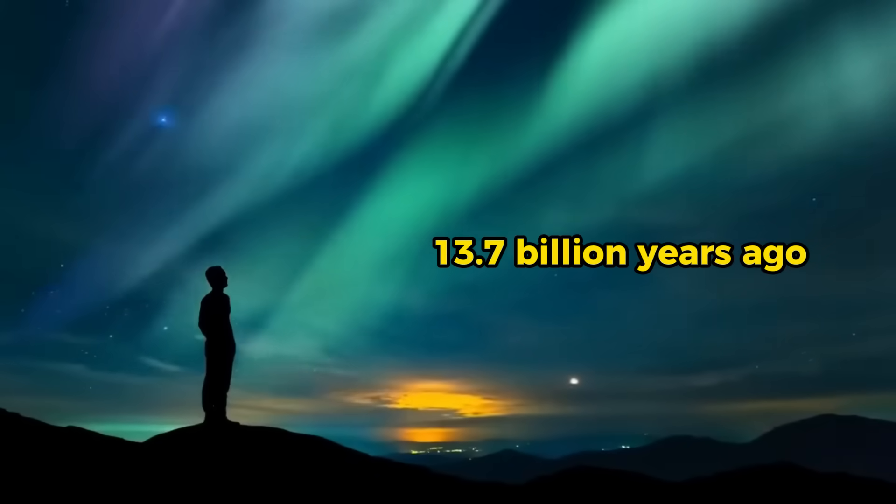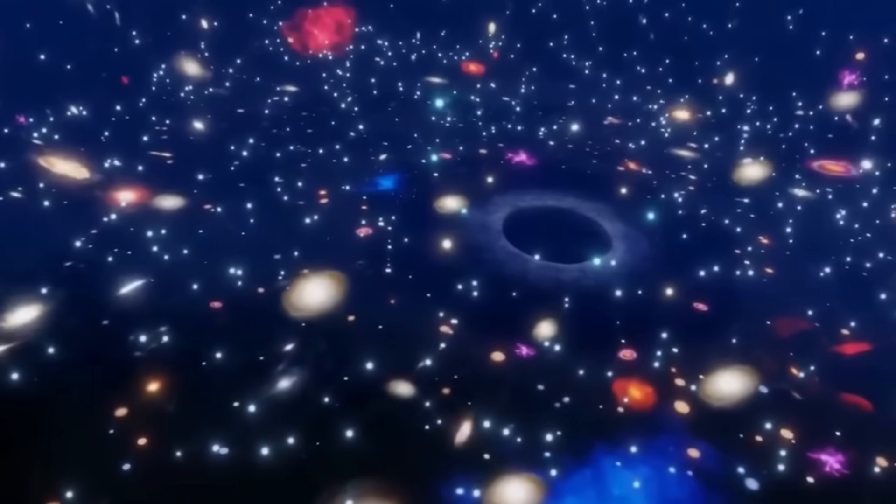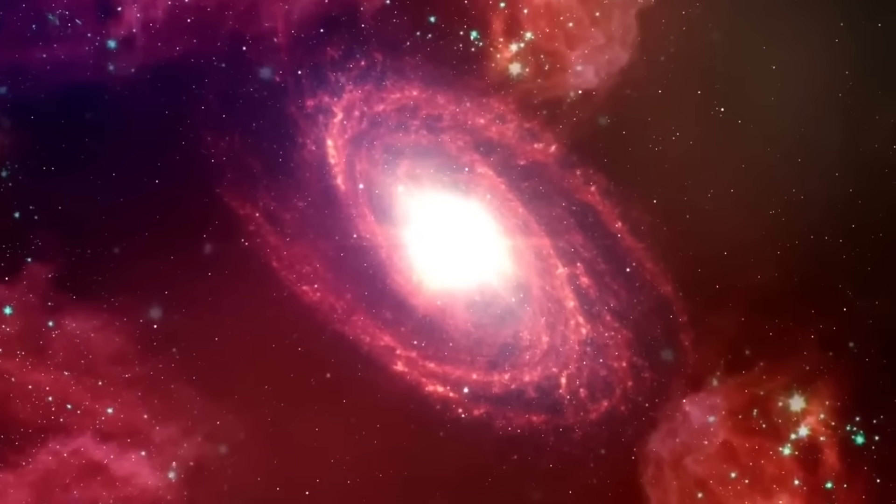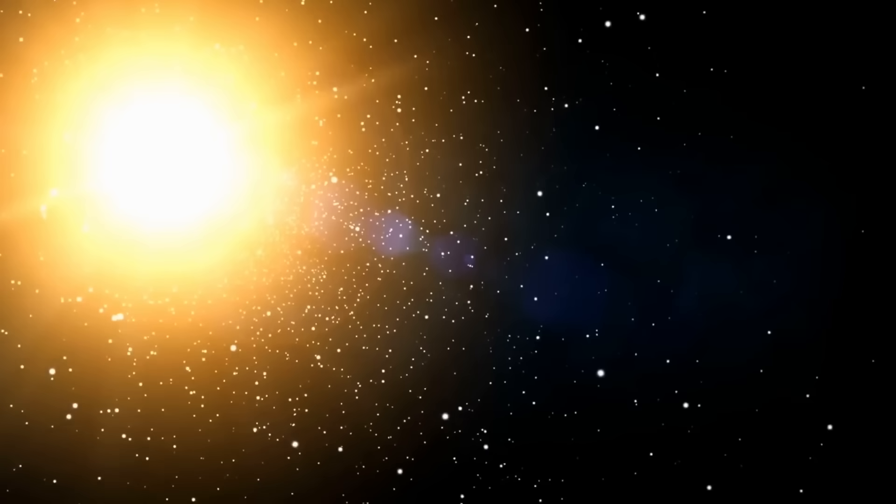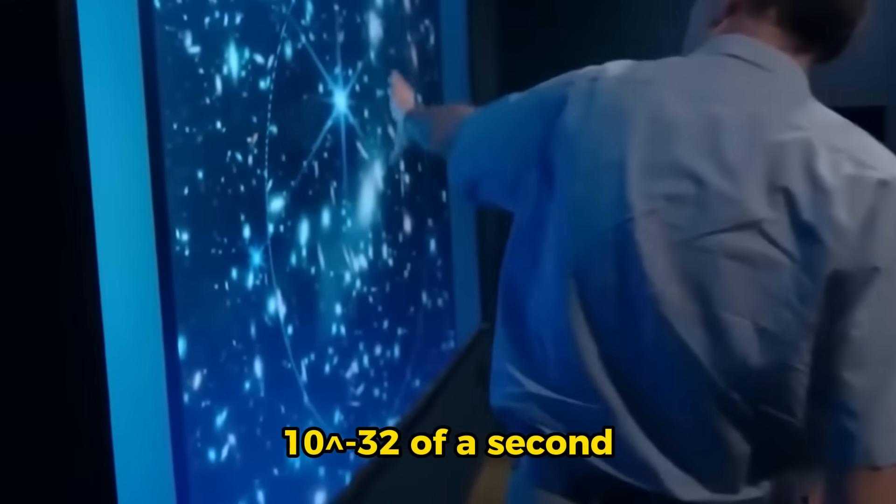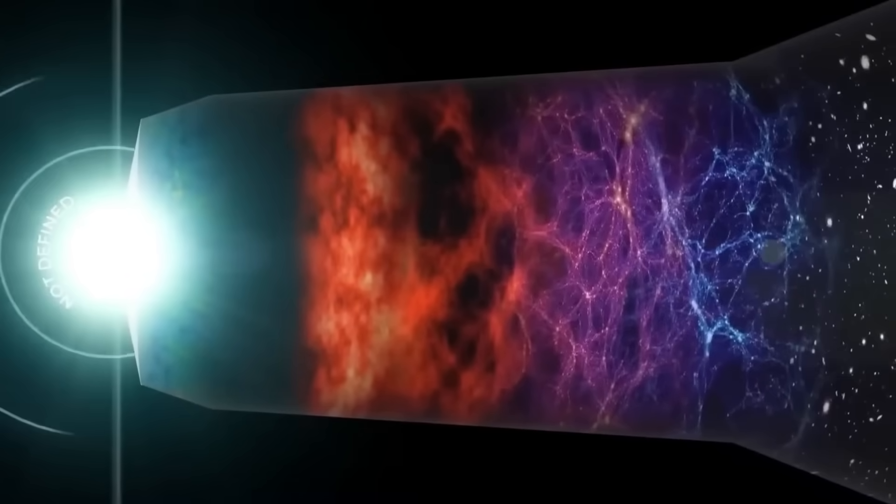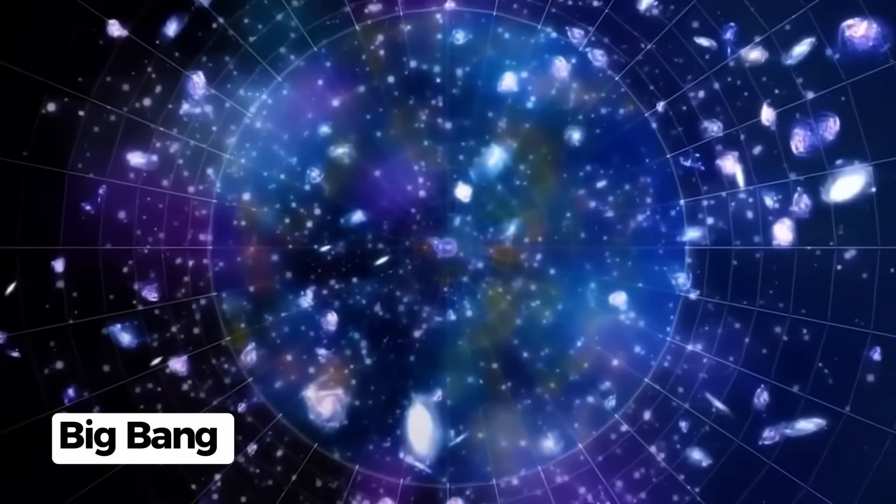More than 13.7 billion years ago, the universe was in a very dense place called a singularity that was very hot and had an infinite amount of matter. Following that, there was a huge and sudden growth. This sped up the expansion of the universe faster than light. Alan Guth's groundbreaking idea from 1980 was the first to talk about this era of cosmic inflation, which lasted only a few hundredths of a second or 10 to the power of negative 32 of a second. This idea changed the way we think about the Big Bang forever.